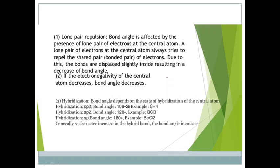Lone pairs of electrons at the central atom always try to repel the shared pair or bonded pair of electrons. Due to this, there is a decrease in bond angle. If the electronegativity of the central atom decreases, bond angle decreases.